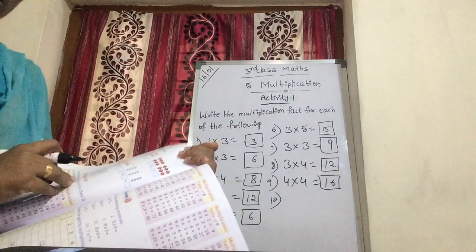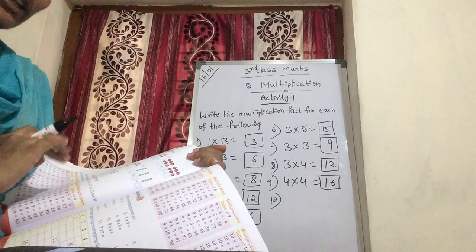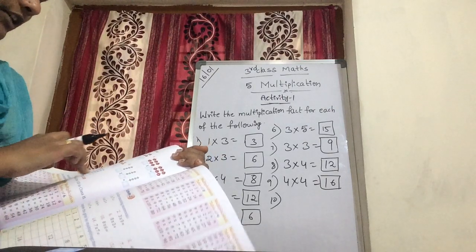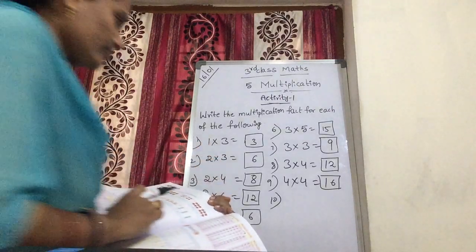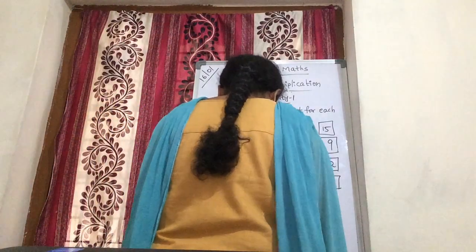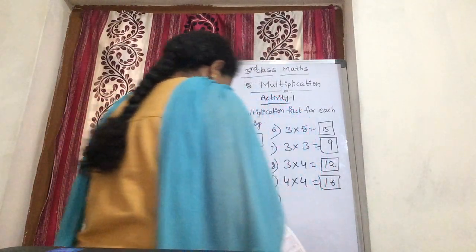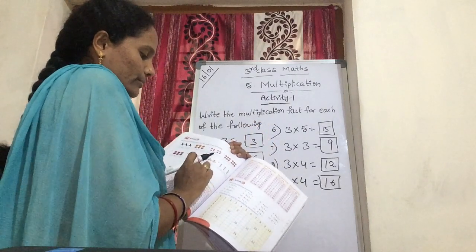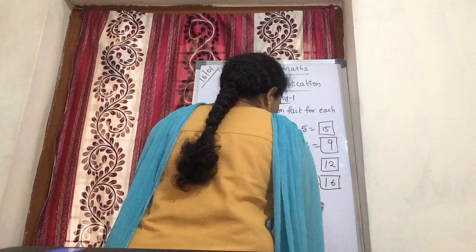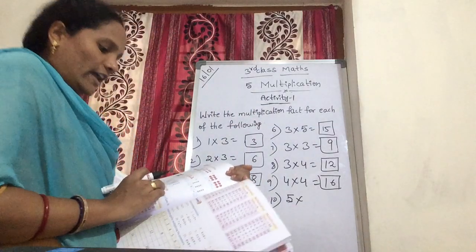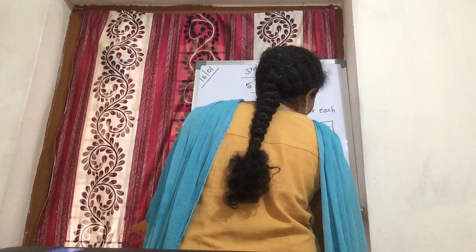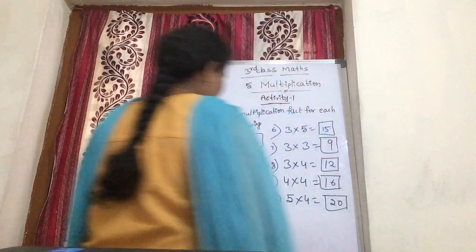Now, stars. How many stars are there? First, count how many rows — 1, 2, 3, 4, 5 — five rows. Each row having how many stars? 1, 2, 3, 4 — four stars. So, 5 fours are 20. Total 20 stars are there.